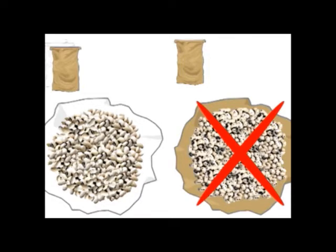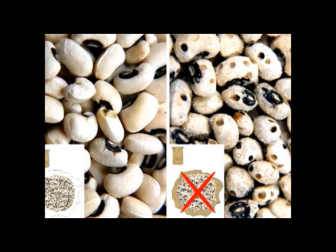Triple bagging prevents cowpea bruchid damage, allows cowpea seeds to be stored for long periods till when prices have gone up and can be sold for more money, and also prevents or minimizes the use of pesticides.